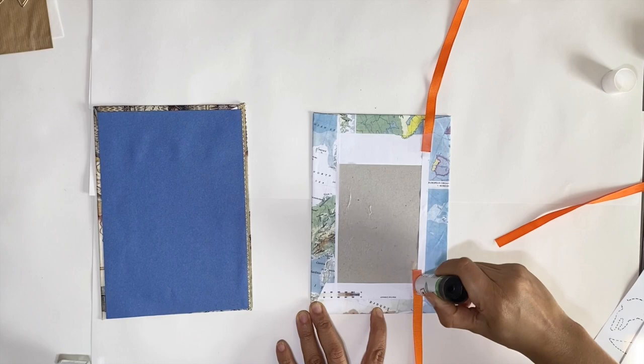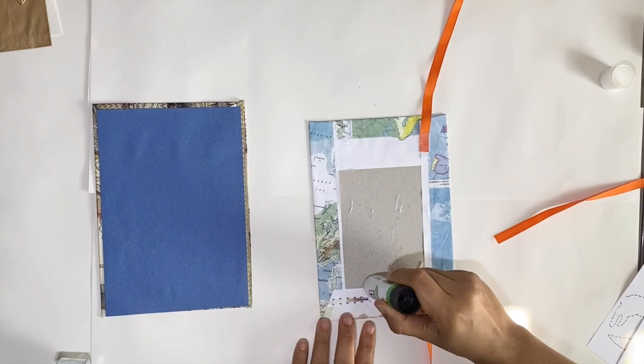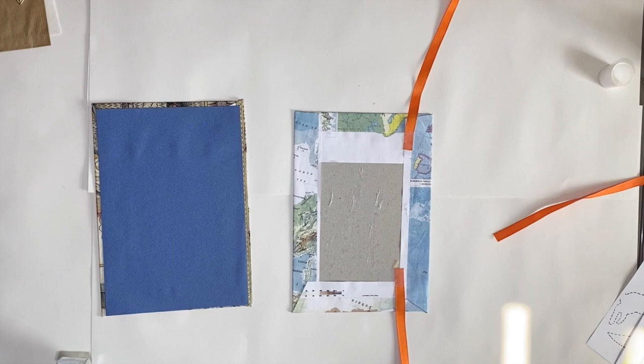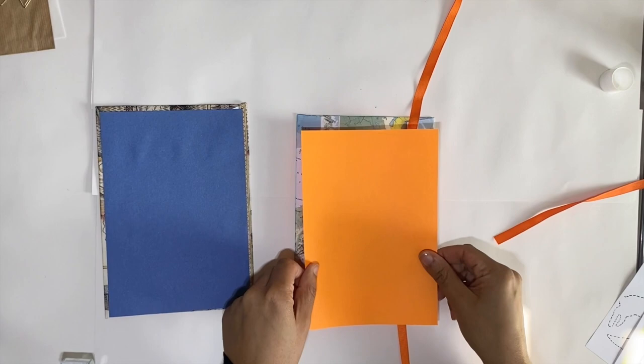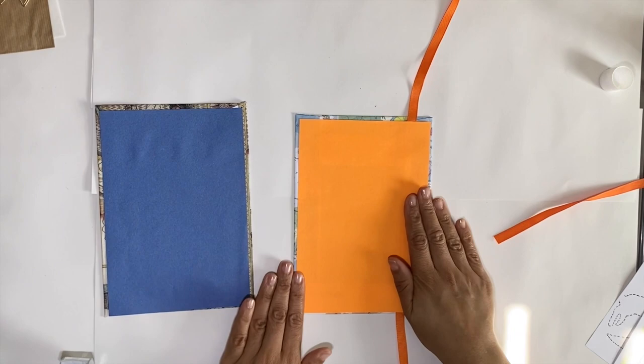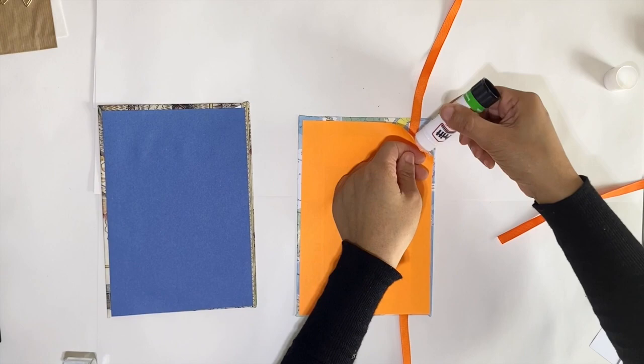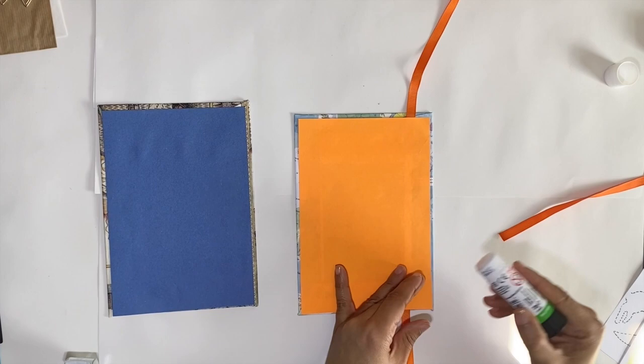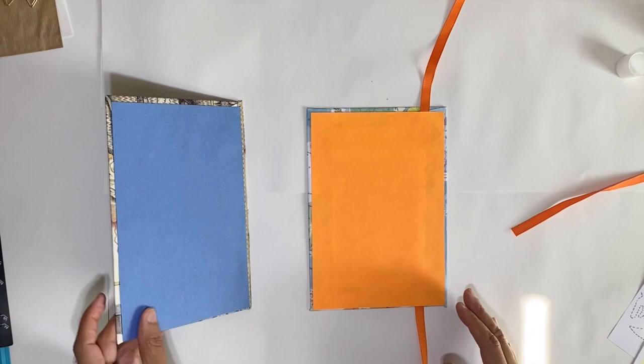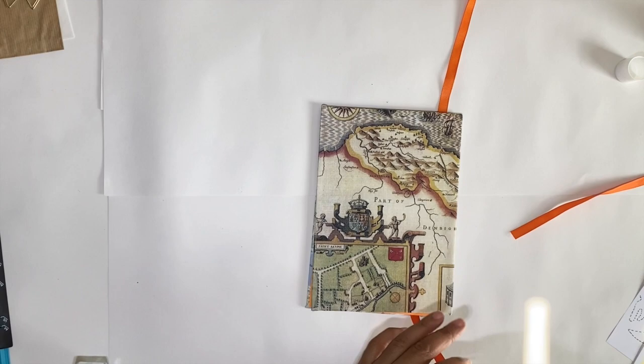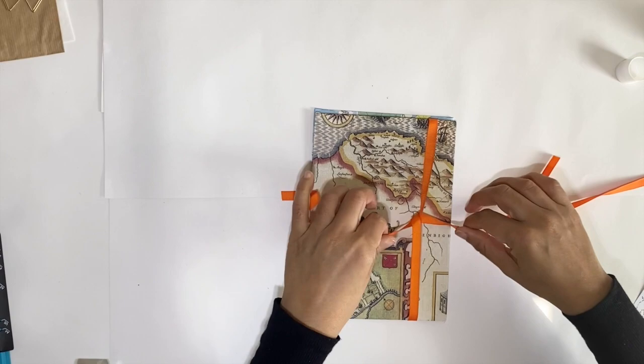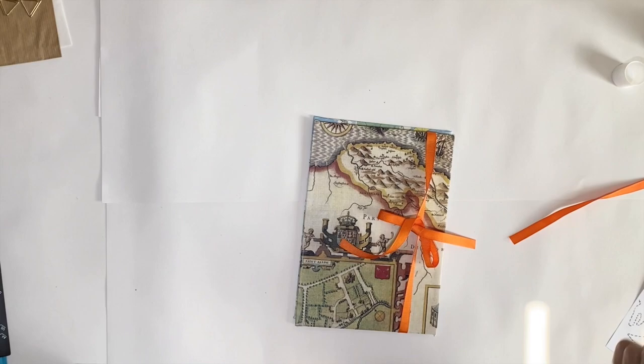Once you've done that, then use a piece of paper to cover over the ribbons and glue it in place. I'm just going to test out my ribbon just to see if it's the correct length and tie it up in a bow. You can always trim it down if it's a little bit too long. The ribbon is a really good touch because it really helps to keep everything neat together.